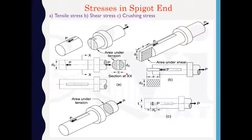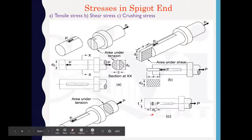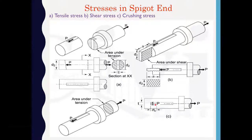Another type of failure that may occur in the spigot end is shear failure. Due to the cotter, the spigot end is subjected to double shear. The third type of failure is crushing stress. Due to the cotter there is a load on the spigot end, and at the contact of the two components — the spigot end and the cotter — there may be chances of crushing stress.